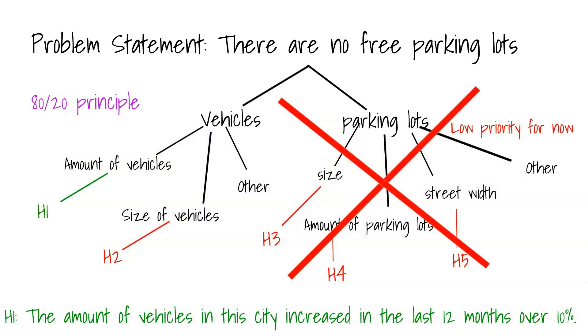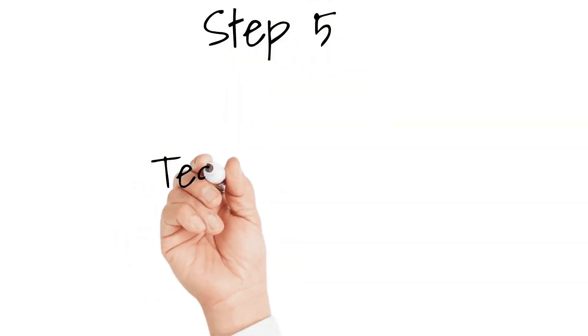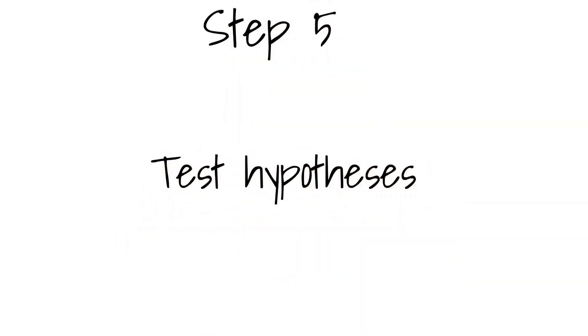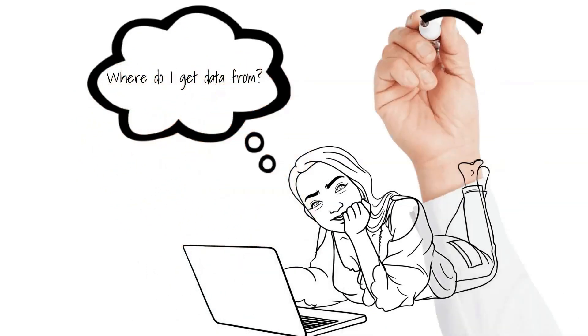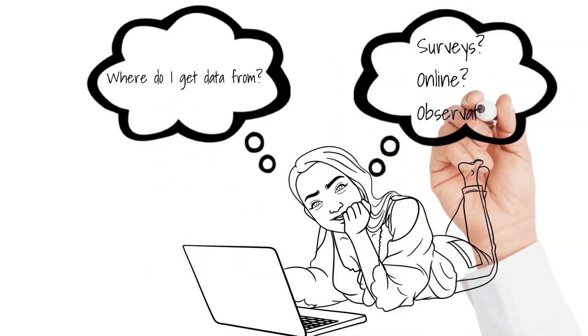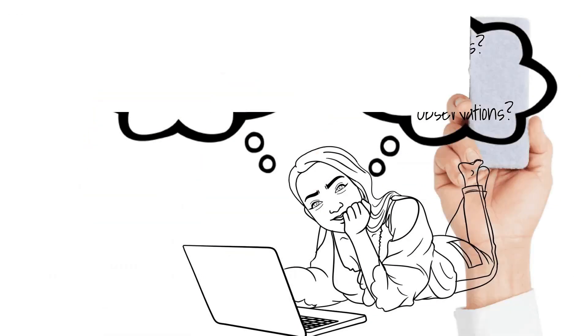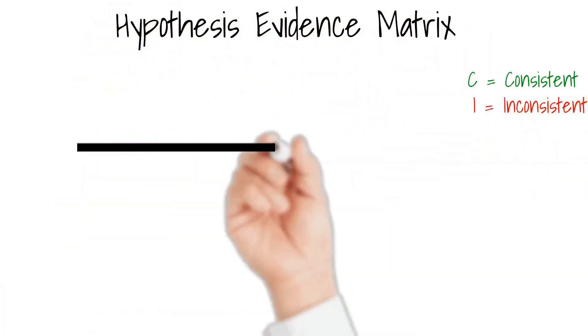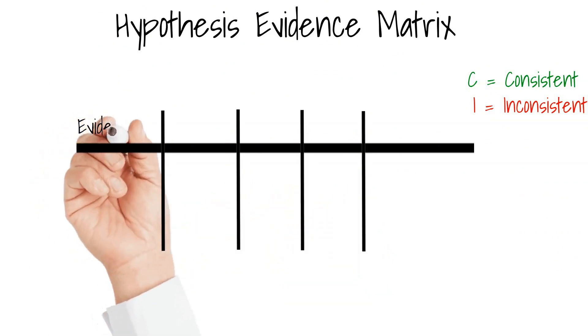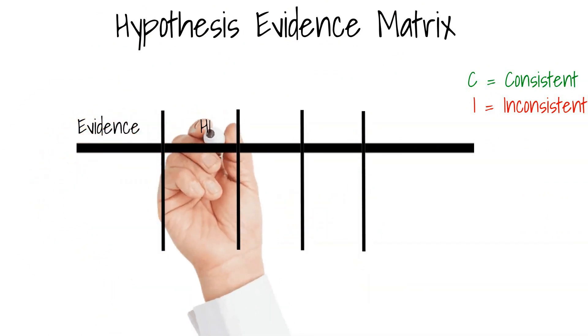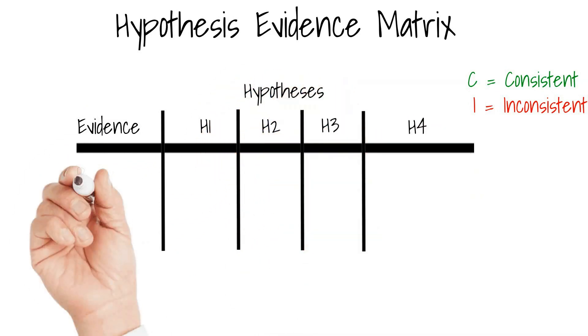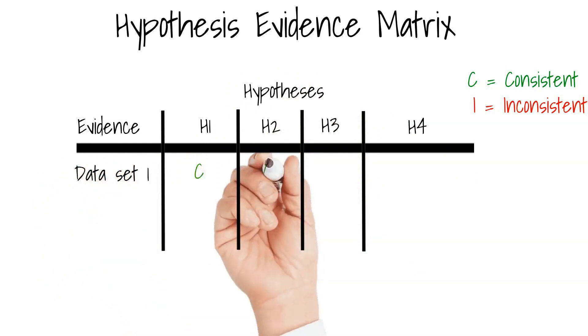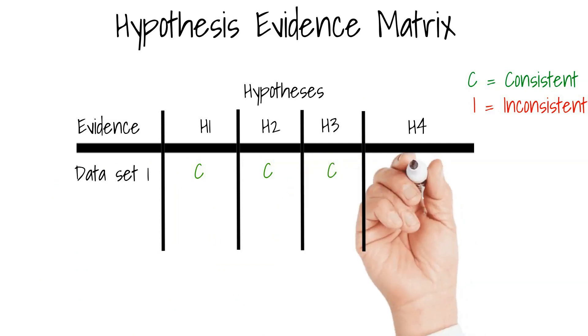Step five: now gather data and evidences which might be relevant for each hypothesis. Data gathering could be asking people around you, looking up for available data in the internet which might have valuable information for your case. Start with the high priority hypothesis first. For this we will use a hypothesis evidence matrix. Evidences in the first column, and in the other columns we enter our hypothesis.